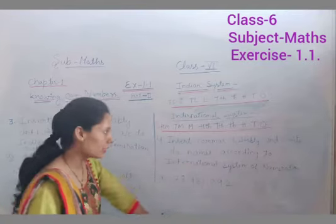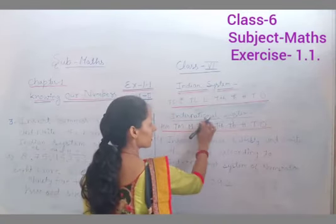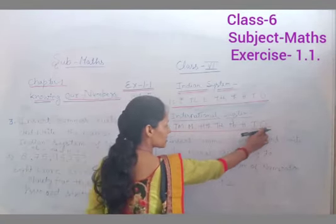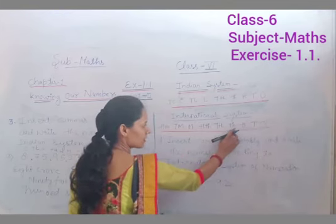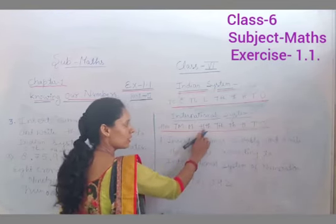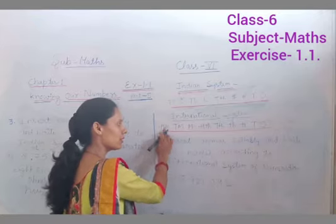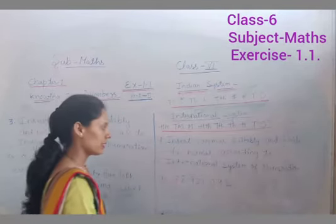After that hume international ke according likhna hai. And we know that maine yahan likha hua, international system ke according place value chart kaise banta hai. Ones, tens, hundreds, thousands, ten thousands, hundred thousands, millions, ten millions, hundred millions, billions, ten billions, aise according hota hai.